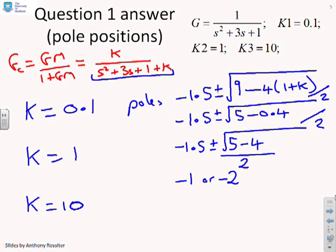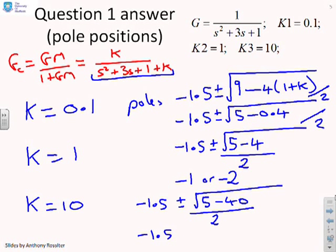And then finally, if K equals 10, you'll get minus 1.5 plus or minus the square root of 5 minus 40 over 2. And clearly, what this gives you is minus 1.5 plus or minus j root 35 over 2. So with K equals 10, you've got complex roots. Whereas with K equals 0.1 and K equals 1, you've got real roots.